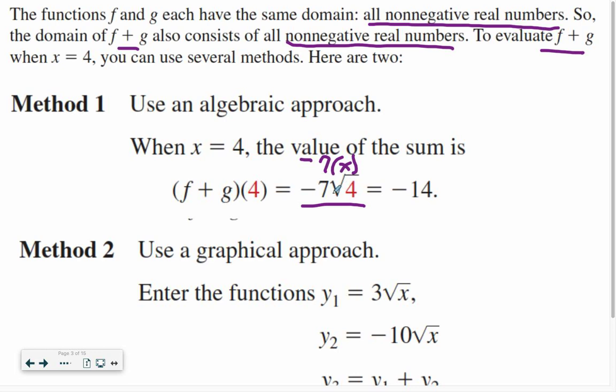I can then find that the square root of 4 is 2. So negative 7 times 2 is negative 14. That was easy to use algebraically.